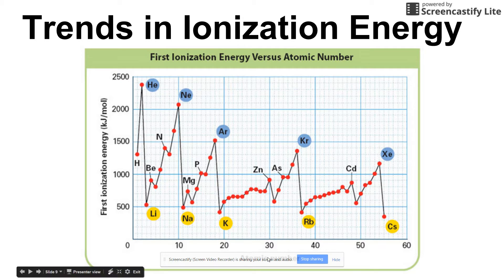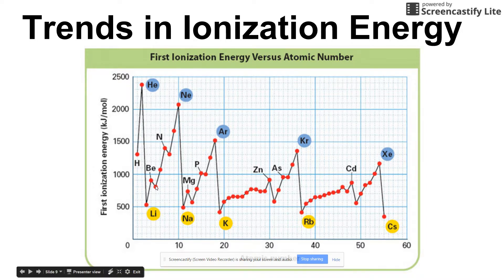Looking at the graph, the x-axis is atomic number and the y-axis is first ionization energy. Moving across a period starting with lithium, ionization energy is generally increasing. The yellow highlight shows group one, and as you move down the group, ionization energy is generally decreasing.